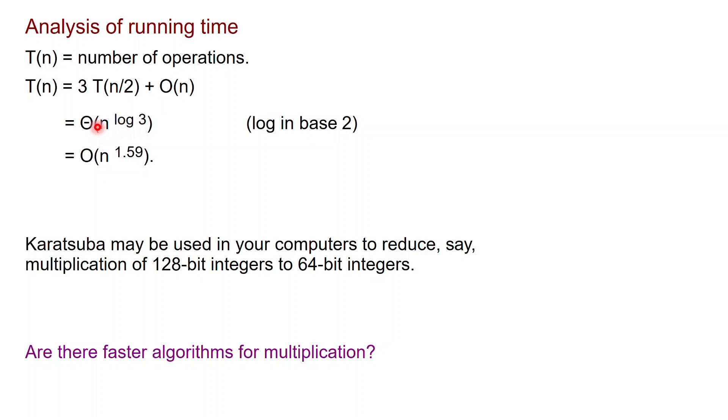So this recursion resolves to n to the log base 2 of 3. This is big O, as we just saw. In fact, it can even be shown to be a big Omega, so this thing is tight. And numerically, log base 2 of 3 is about 1.59. And this is a very big saving from the n squared algorithm.